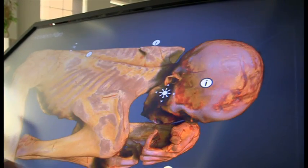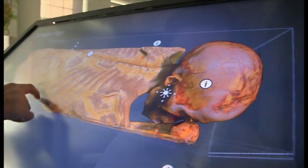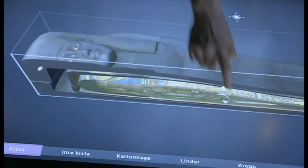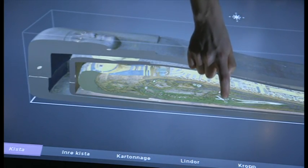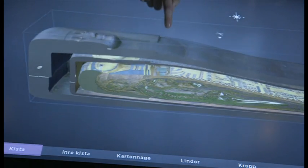We started the process by CT scanning, so that describes the interior, but it doesn't give you any color information or surface information. So we continued the process by doing laser scanning and photogrammetry, and that process gave us information about the surface and the textures and colors of the mummy. And then we were taking all of that data and put it onto the table to make it accessible for museum visitors.